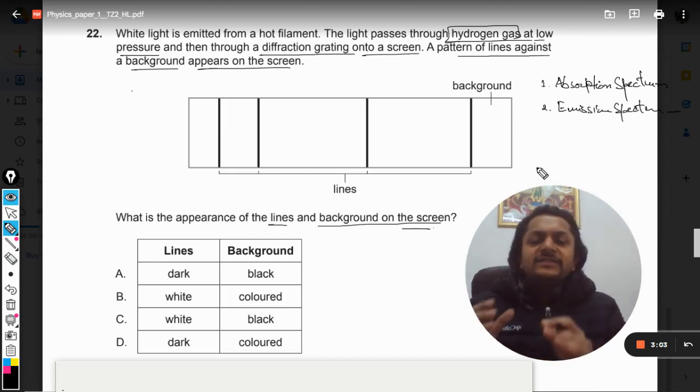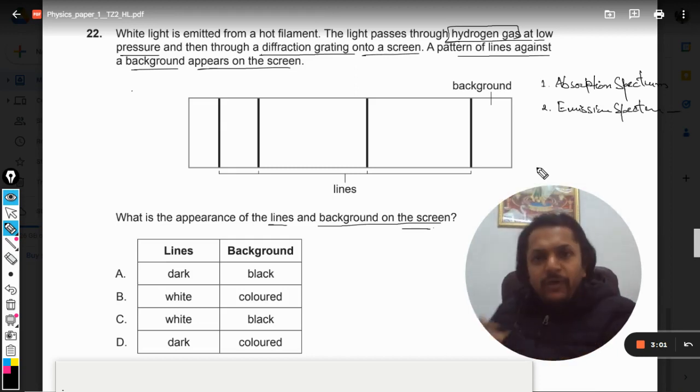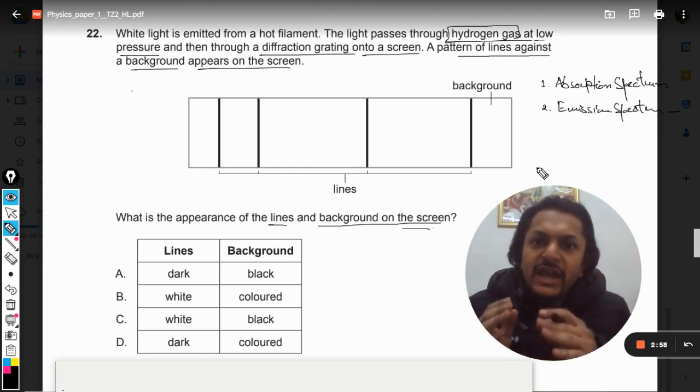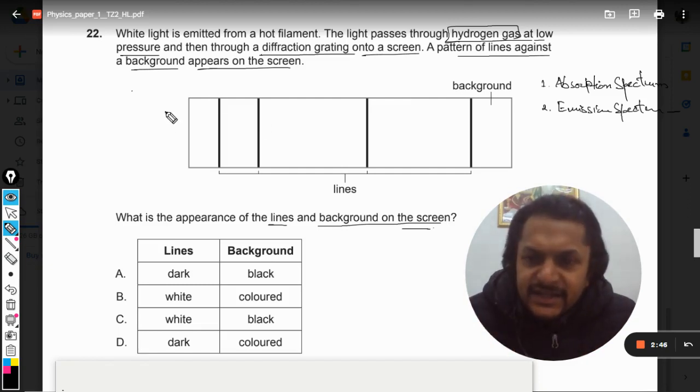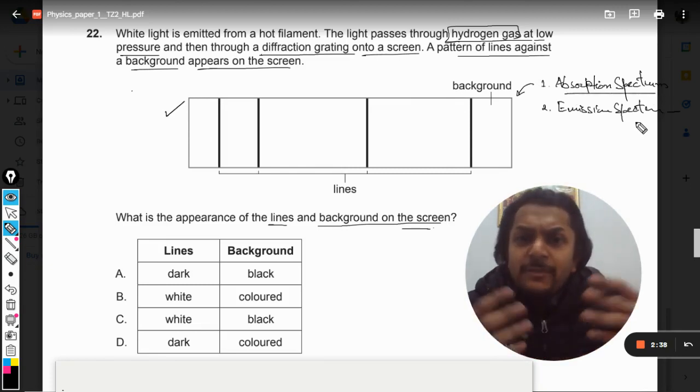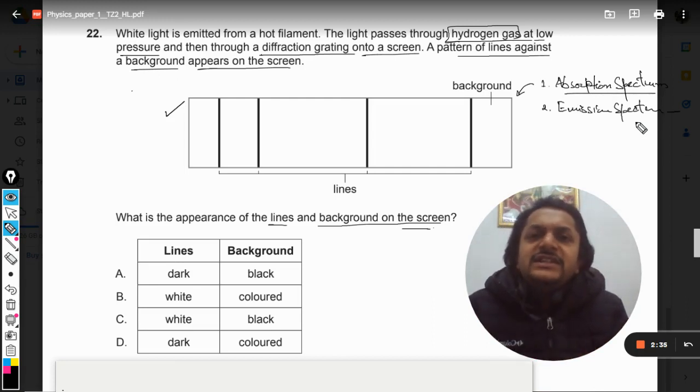Let us say there is a source of white light coming from the source. It enters into hydrogen gas. Some of the energies from that white light get absorbed by the hydrogen gas. So this spectrum that we get is an example of absorption spectrum because some energy has already been absorbed by the hydrogen gas.